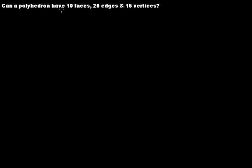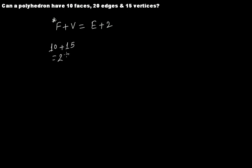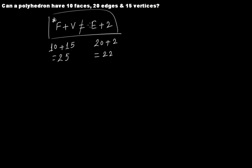Can a polyhedron have 10 faces, 20 edges, and 15 vertices? We test it using F plus V equals E plus 2. So 10 faces plus 15 vertices equals 25, but 20 edges plus 2 equals 22. Since 25 does not equal 22, Euler's formula is not verified. Therefore, we cannot form a polyhedron having 10 faces, 20 edges, and 15 vertices.